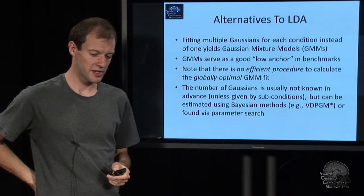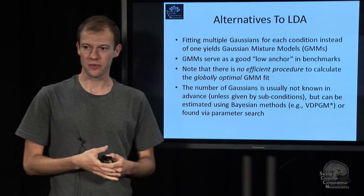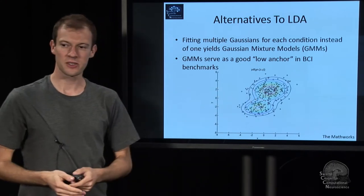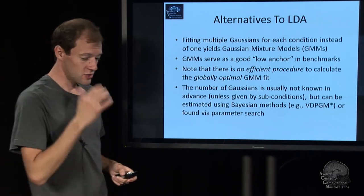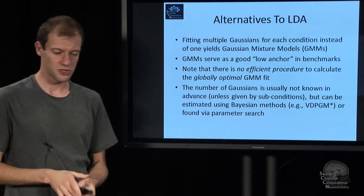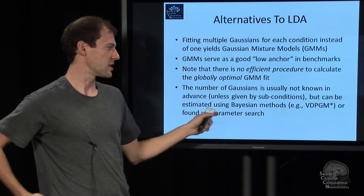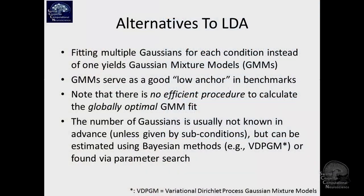There isn't really a well-understood algorithm that fits GMMs optimally — there are methods that optimize something incrementally, but they can hit local optima. Also, it's usually not clear in advance how many Gaussians you want to fit, unless you know how many sub-conditions you had. There are methods for that — variational Bayesian, Dirichlet-process Gaussian mixture models — so that's another alternative.